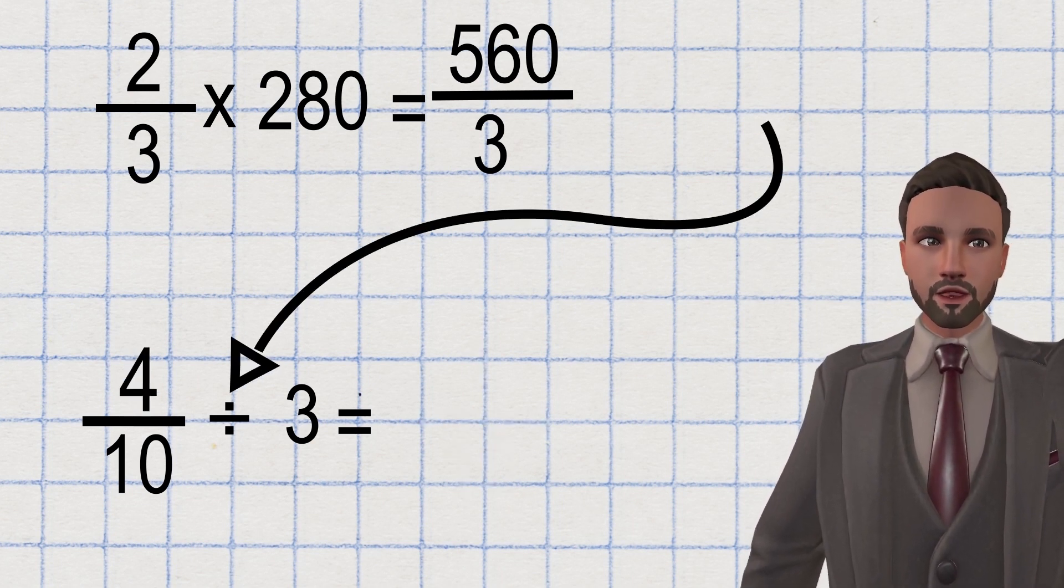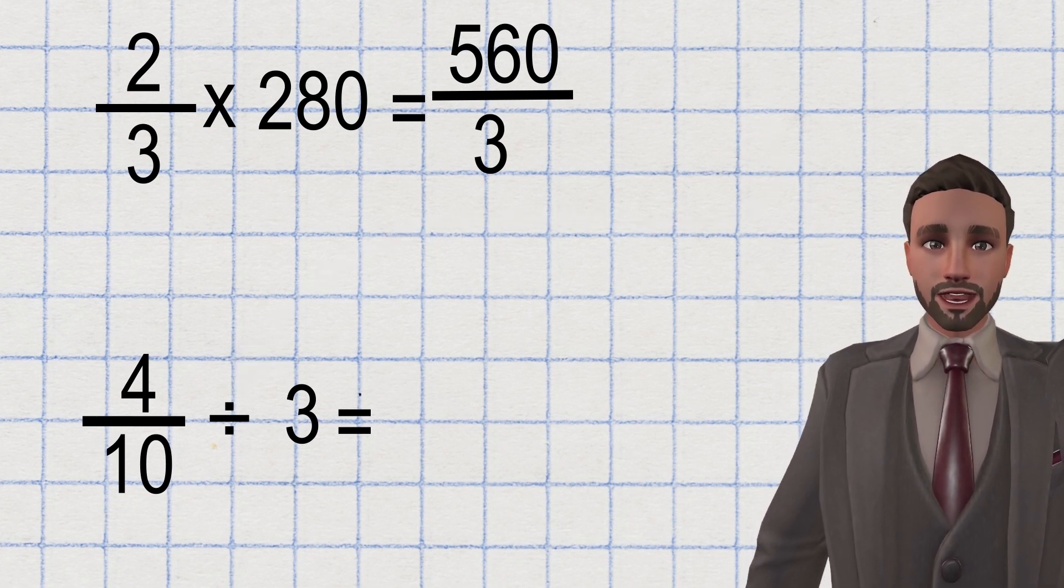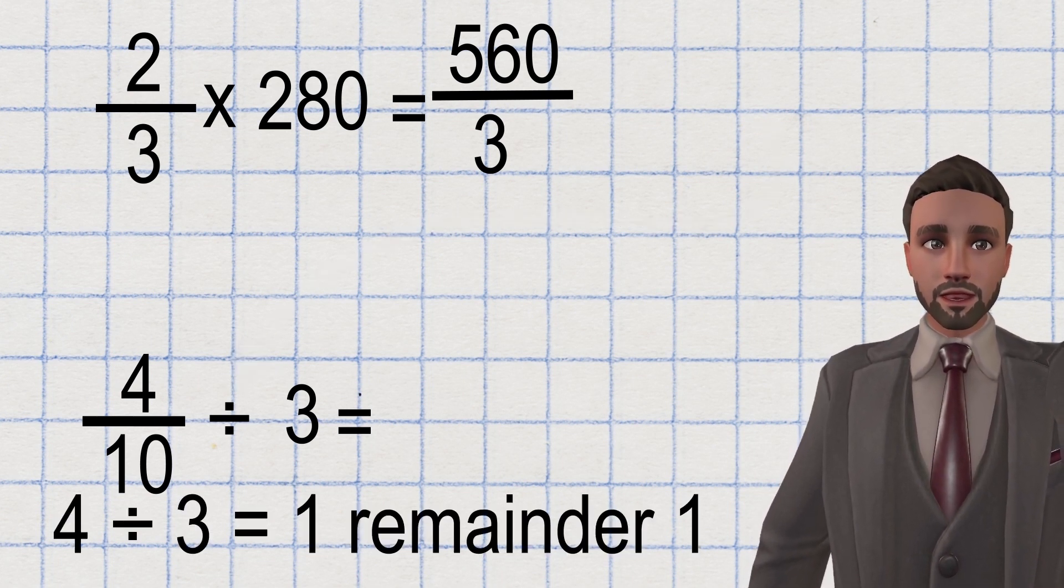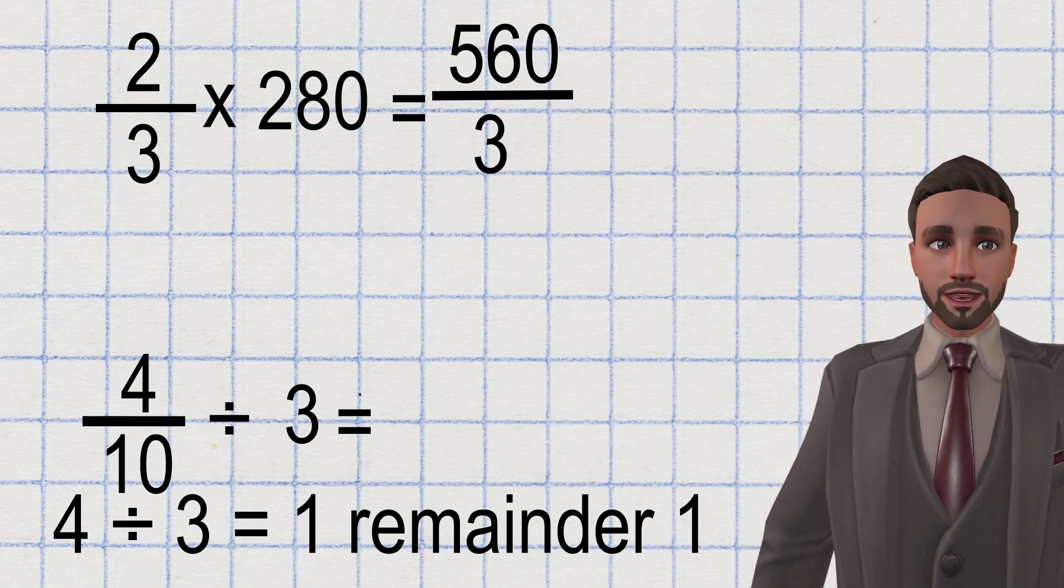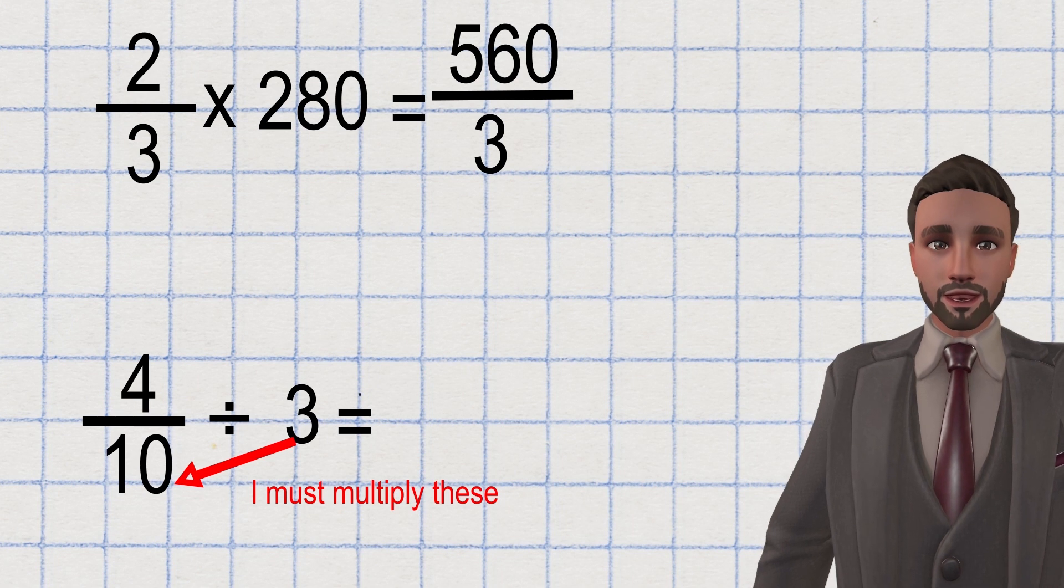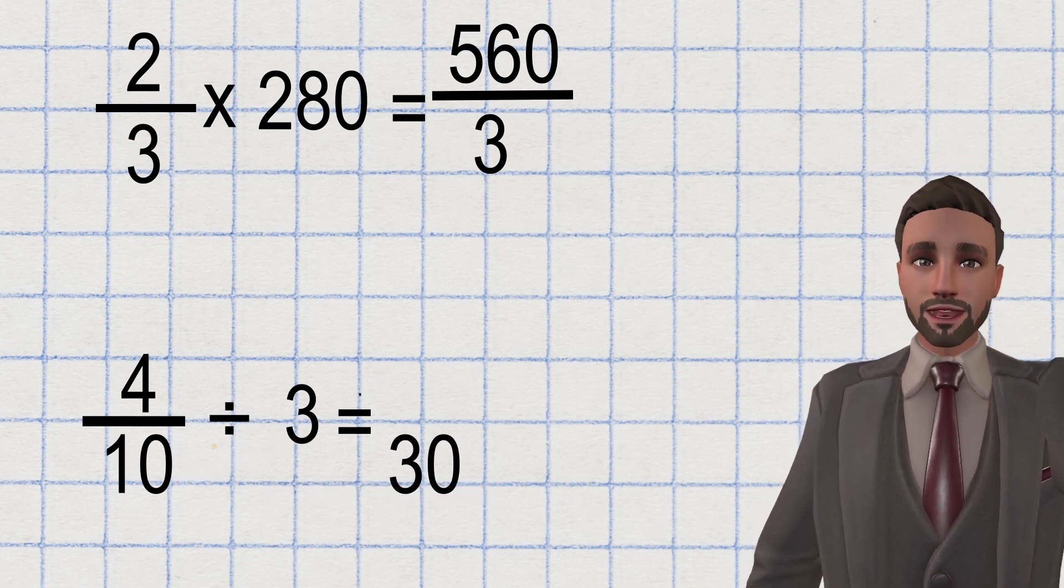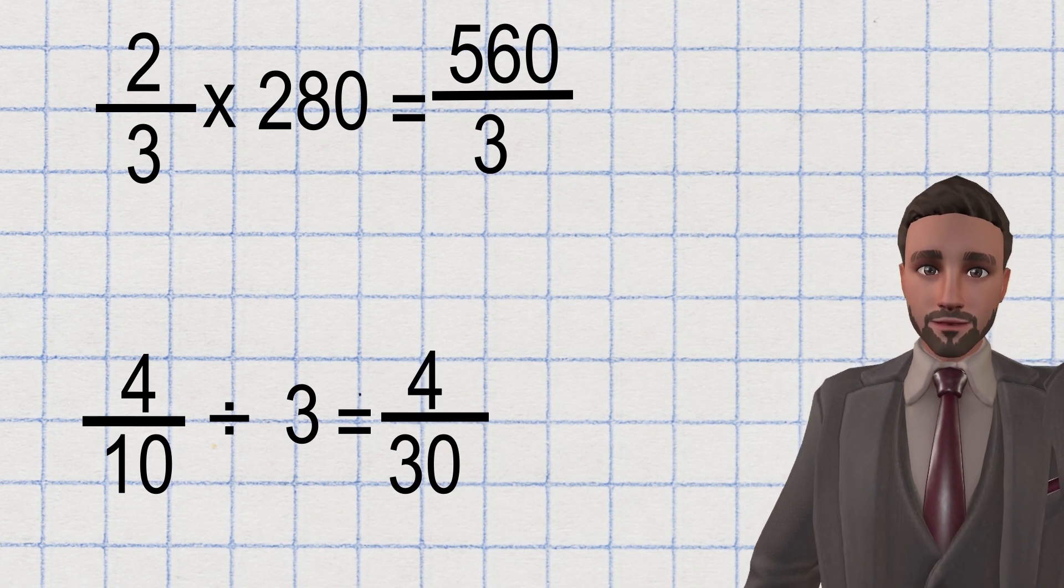Imagine this question was four tenths divided by three instead. Here, four can't be shared between three equally. When this happens, I need to multiply the denominator. So here I do 10 times three, giving me 30. I don't touch the numerator at all. This would give me the answer of four thirtieths.